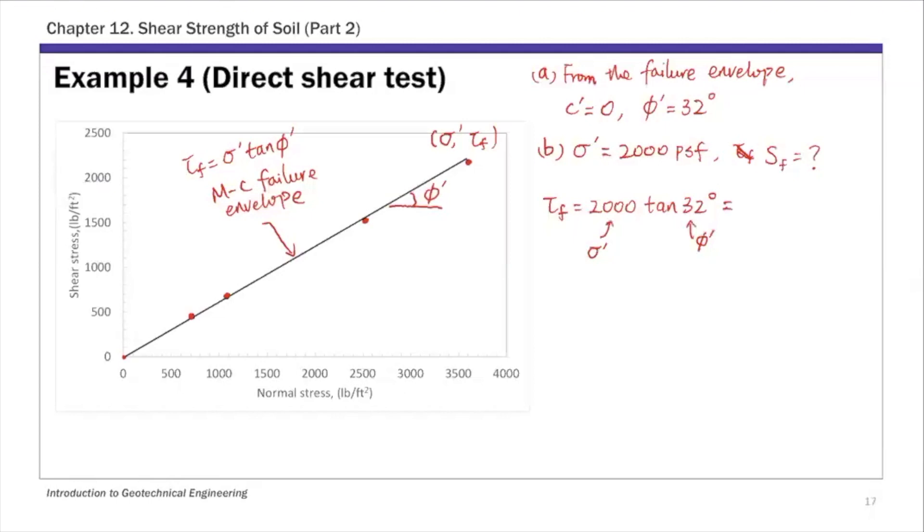This is 1249.7 PSF. That's the shear stress at failure corresponding to 2000 PSF normal stress. Then the shear force at failure SF is tau f times cross-sectional area A.